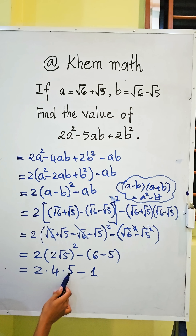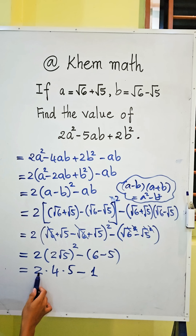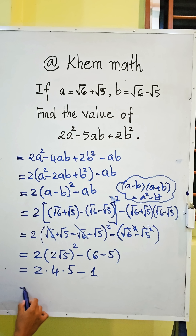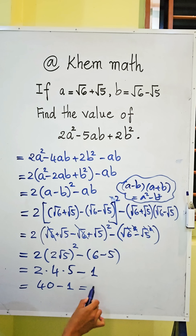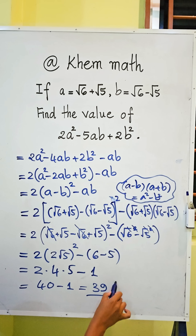So 5 times 2 times 4 gives 40, and 40 minus 1 equals 39. That is our answer.